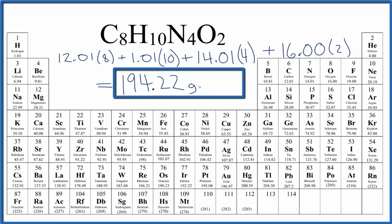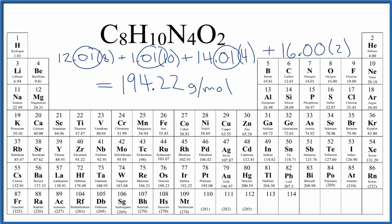And the units are grams per mole. My periodic table rounds to two decimal places. If your periodic table rounds to a different number, you might get a slightly different answer. What this means is that if we had 194.22 grams of caffeine, that would be one mole. Or if we had one mole, we'd know the mass to be 194.22 grams.